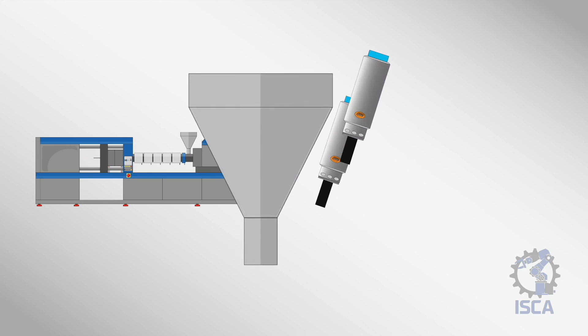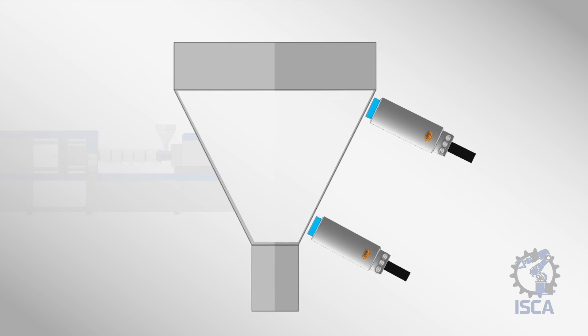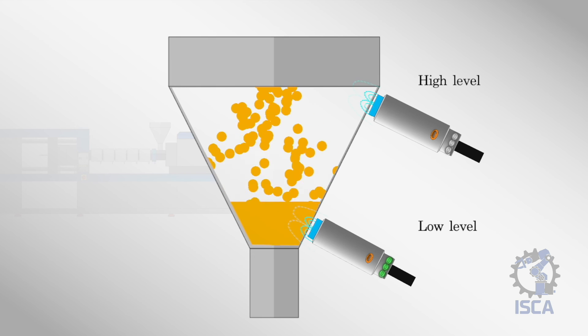A common application is monitoring material hoppers on injection mold machines to prevent disruptive downtime from running empty. Capacitive proximity sensors are often mounted at the minimum fill level of the hopper.